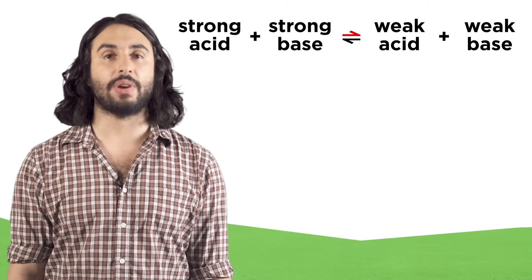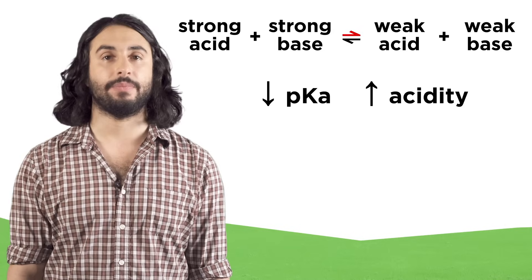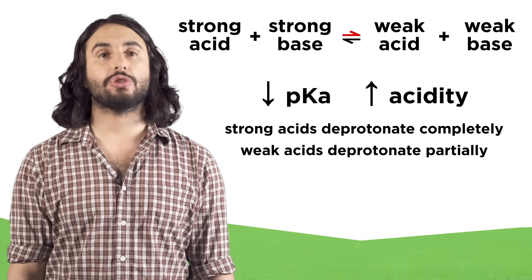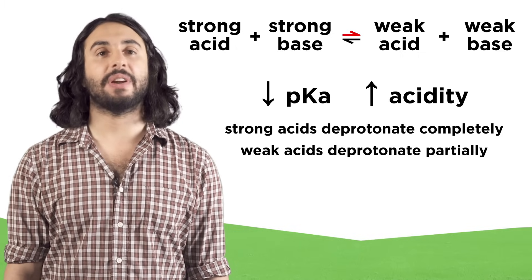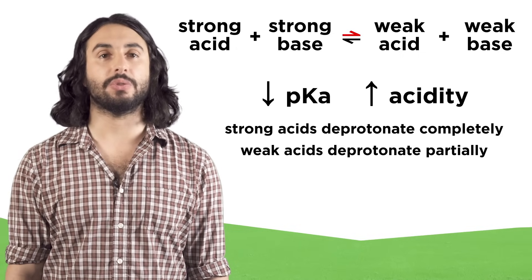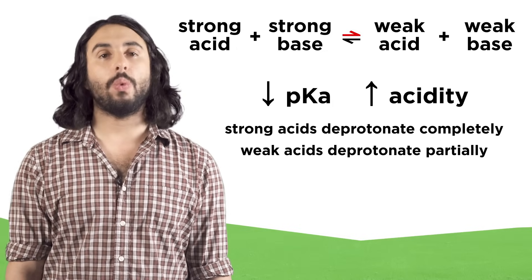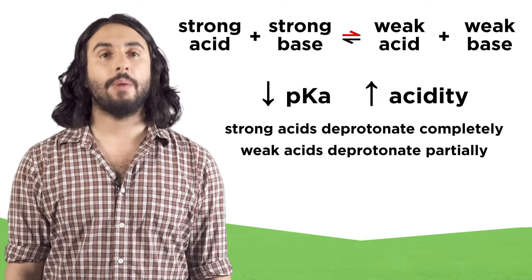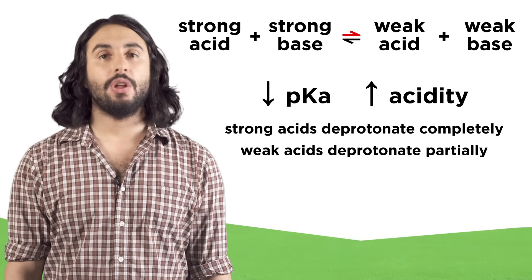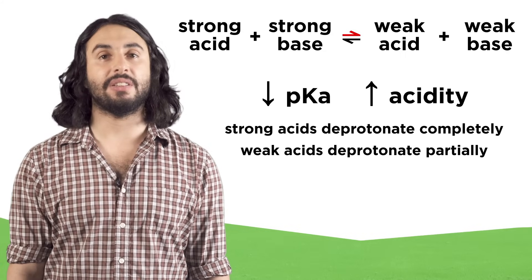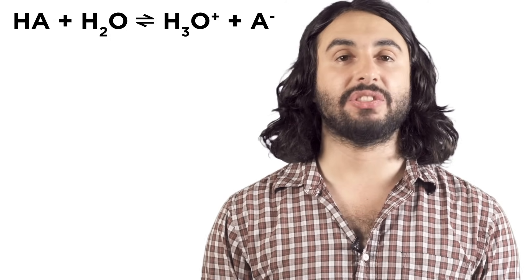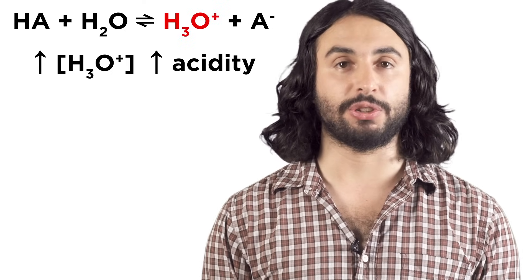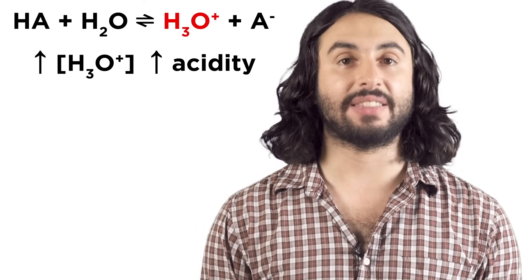We can tell acid strength by looking at an acid's pKa — the lower the pKa, the stronger the acid. Strong acids deprotonate completely, transferring every acidic proton to molecules of solvent or other things in solution. Weak acids only deprotonate partially, generating some of the conjugate acid but won't react completely; the weaker they are, the less completely they will react. The hydronium concentration measures the degree to which an acid transfers protons to water molecules and therefore the strength of the acid.